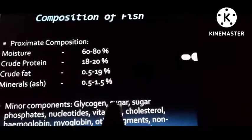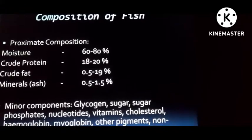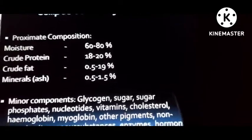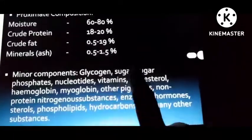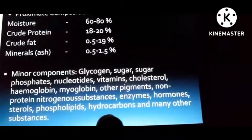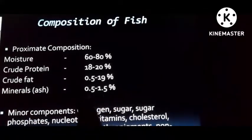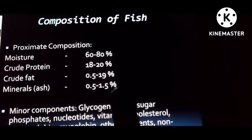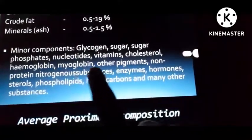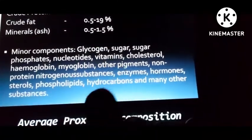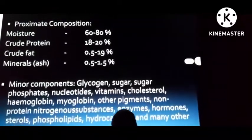The proximate composition of fish: moisture content is 60 to 80 percent, crude protein is 18 to 20 percent, crude fat is 0.5 to 19 percent, and minerals found in fish are 0.5 to 1.5 percent. Minor components include glycogen — sugar is found inside fish.